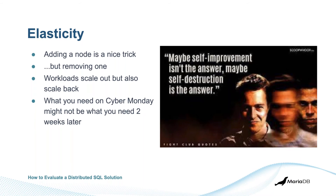The second key feature is elasticity. Adding a node and scaling out is a nice trick, but removing one is an even better trick — especially in 2020 where people hit everything at once and then were gone two days later. Workloads scale out, but they also scale back. What you need in retail on Cyber Monday may not be what you need two weeks later. Distributed SQL architectures tolerate that well.